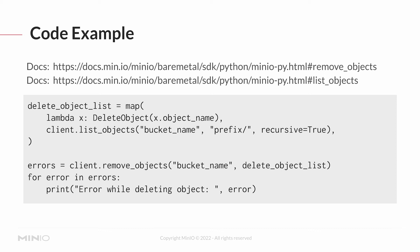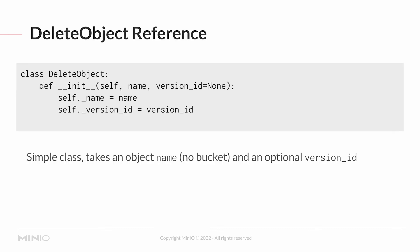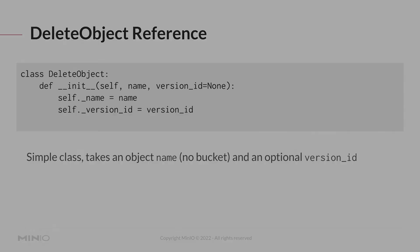When you run remove_objects you may get a list of errors if something goes wrong, so you'll want to check for errors during this process. Remember, it's list_objects and remove_objects — plural. For the DeleteObject reference, you're really just looking at the object name; there's no bucket specified there, and there's an optional version ID if you're dealing with versioning.